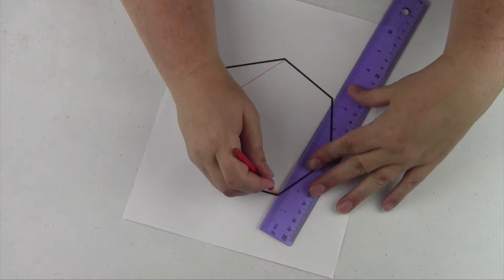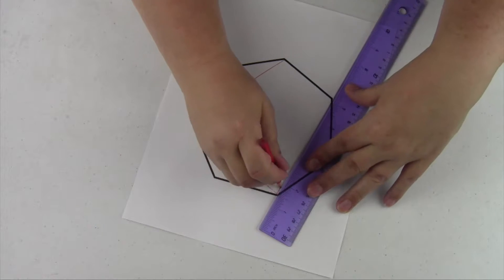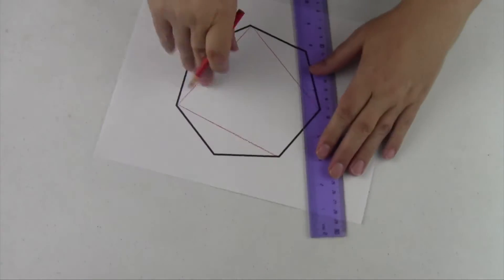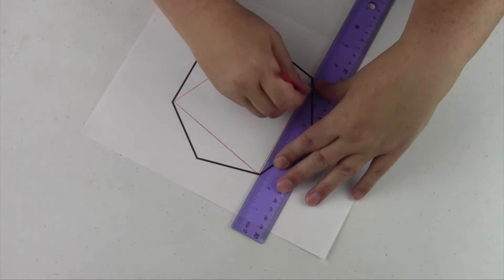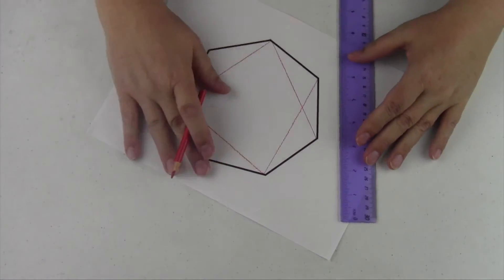When you guys create yours, you'll have a little bit thinner lines, but we wanted to see this on the camera. So skipping one angle, make sure there's only one angle between.